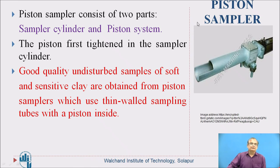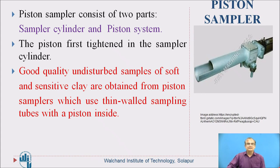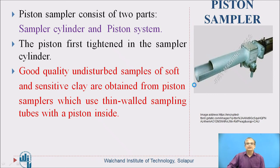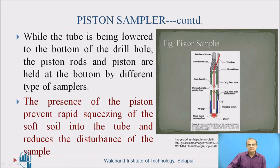The next type is the piston sampler. The piston sampler consists of two parts: a sample cylinder and a piston system. The piston is first tightened in the sampler cylinder. Good quality undisturbed samples of soft and sensitive clay are obtained from piston samplers, which use thin-walled sampling tubes with a piston inside.